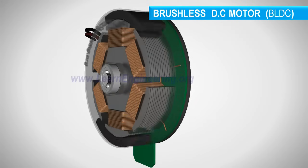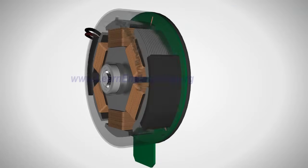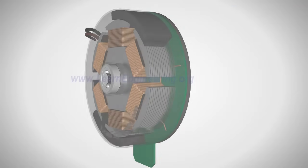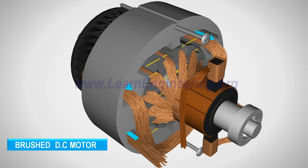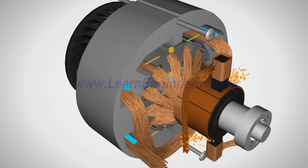They are also lighter compared to brushed motors with the same power output. The brushes in conventional DC motors wear out over time and may cause sparking. Thus, the brushed DC motor should never be used for operations that demand long life and reliability.